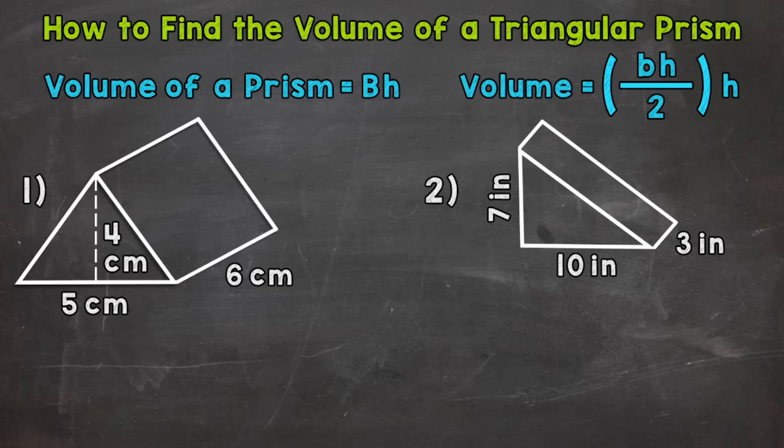The volume for any prism is the area of the base times the height. That capital B means the area of the base, and that H stands for height.